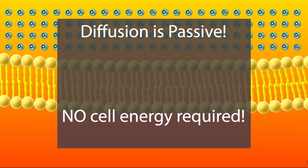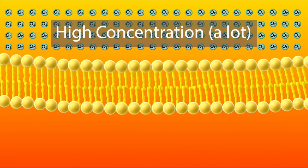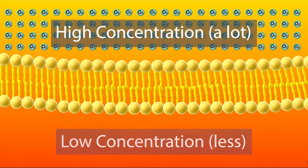We will focus on simple diffusion across the phospholipid bilayer of a membrane, shown here. Notice that we have a high concentration of oxygen on one side of the membrane and a low concentration on the other side.